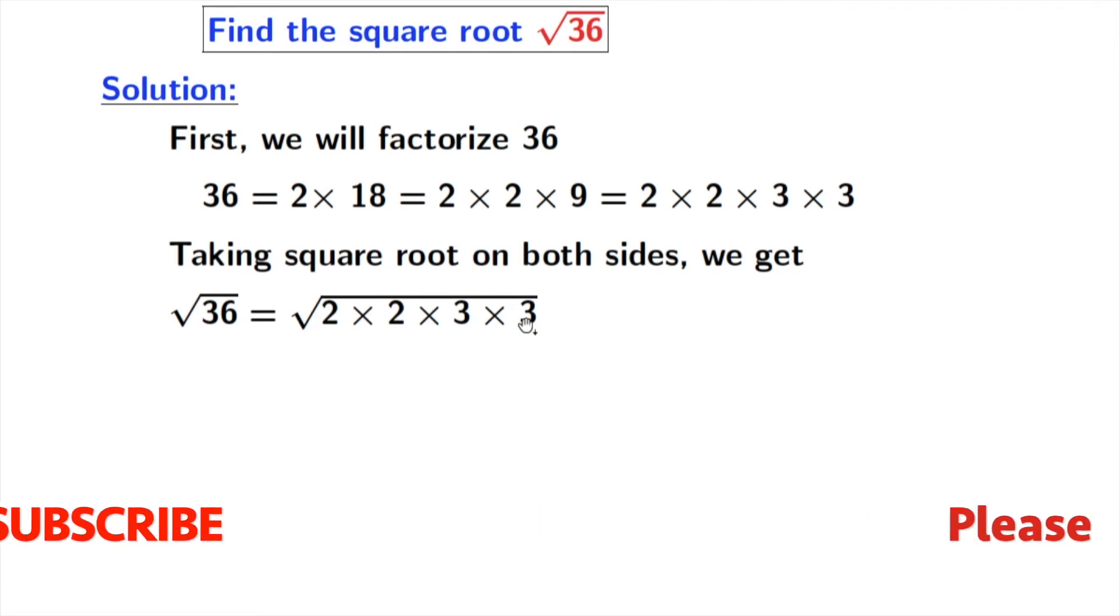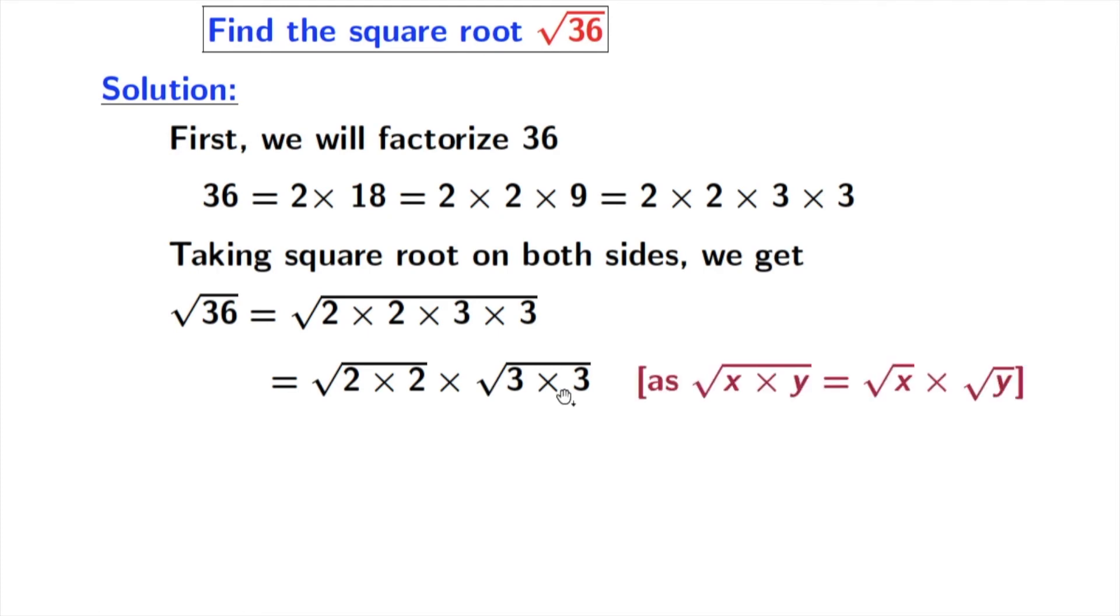Now we will use grouping. Doing that we get square root of 2 times 2 times square root of 3 times 3. As we know that square root of x times y is equal to square root of x times square root of y. Here x is 2 times 2 and y is 3 times 3.